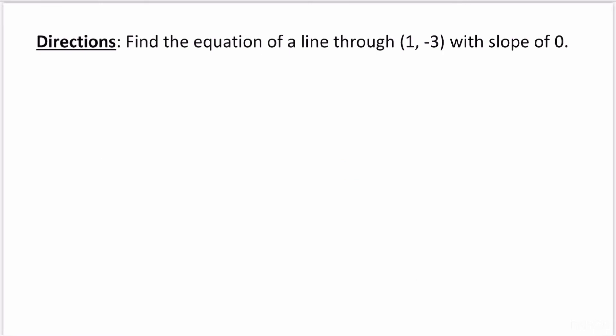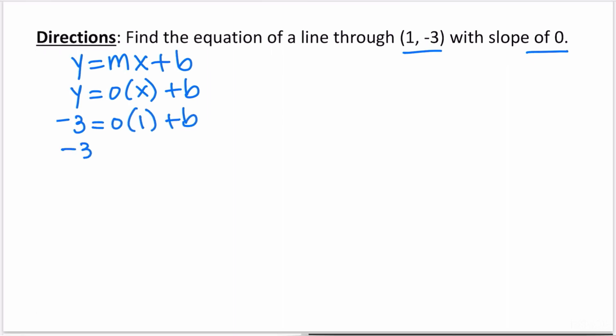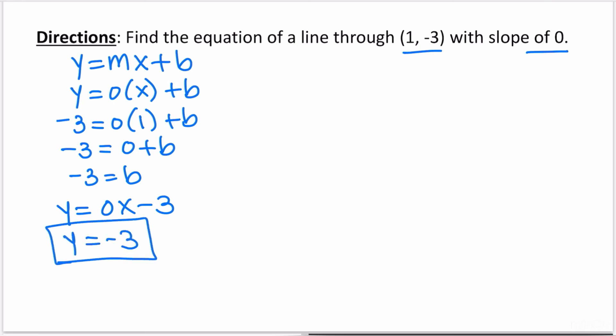Find the equation of a line through the point (1, -3) with a slope of 0. Using y equals mx plus b: slope is 0, so y equals 0 times x plus b. Substituting the point: negative 3 equals 0 times 1 plus b, giving b equals negative 3. The equation becomes y equals 0x minus 3, which simplifies to y equals negative 3.